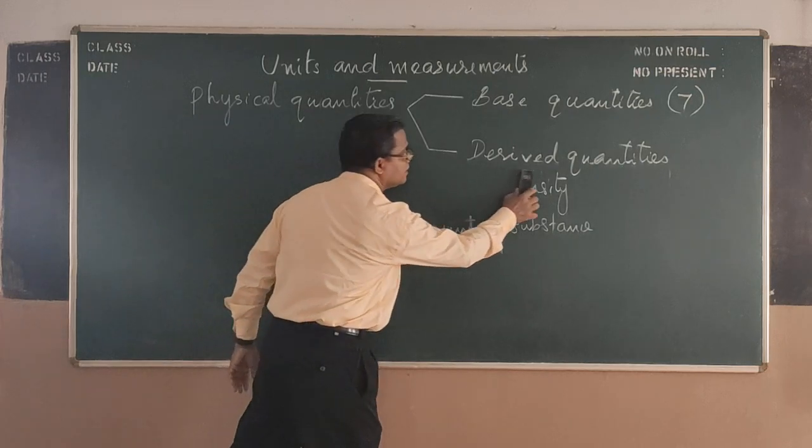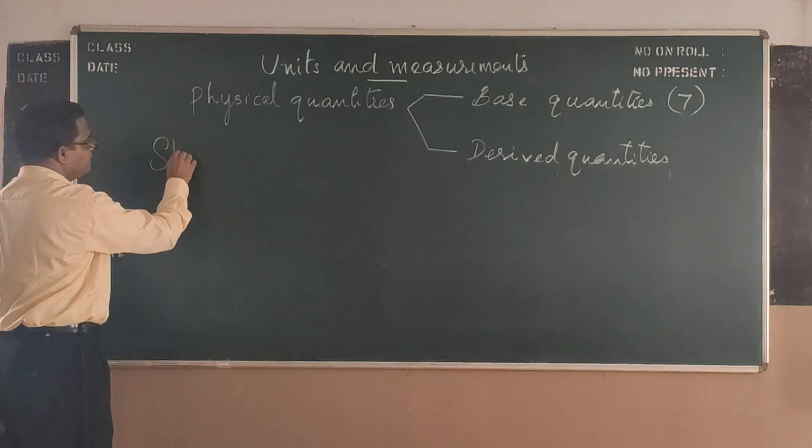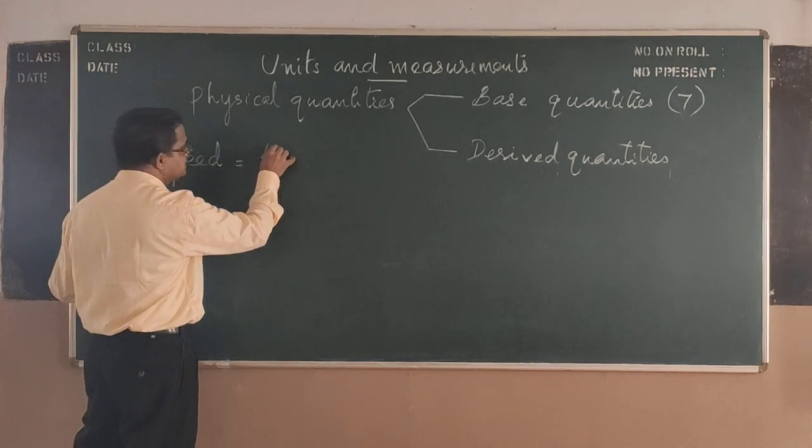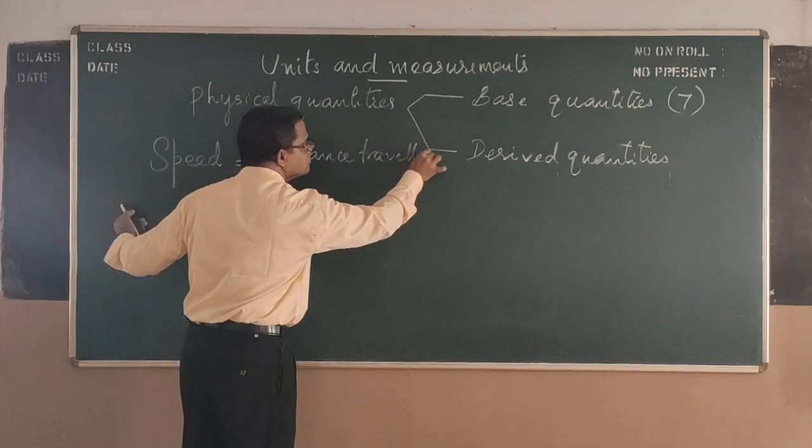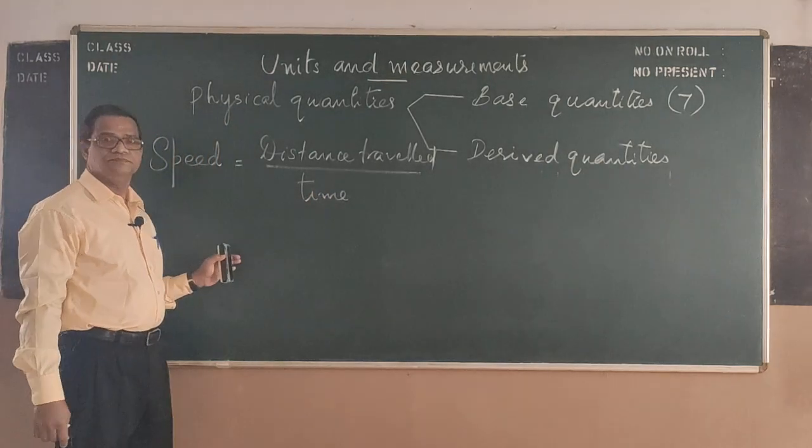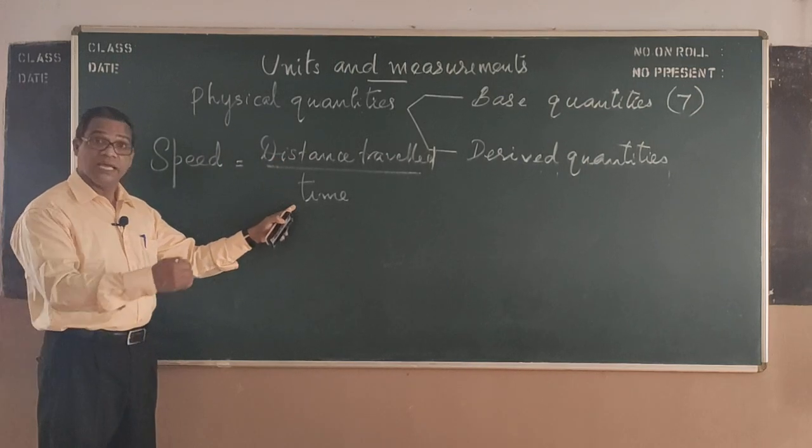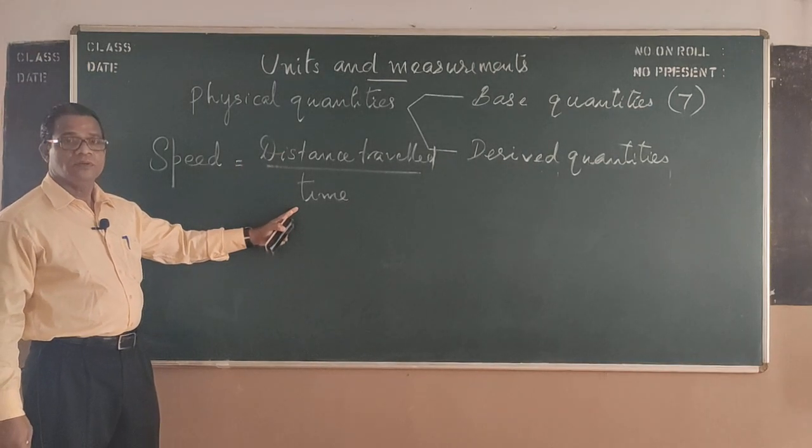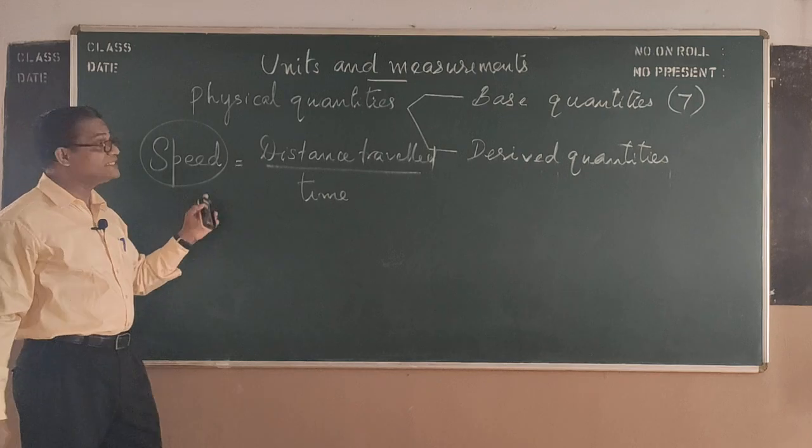So after noting all these seven, let's go for examples for derived quantity. Derived quantity also we can study from your previous models. For example, speed is the distance travelled by time. So distance is length, a fundamental quantity. Time, another fundamental quantity. So from the fundamental quantities we are getting another quantity. This quantity is known as derived quantities.